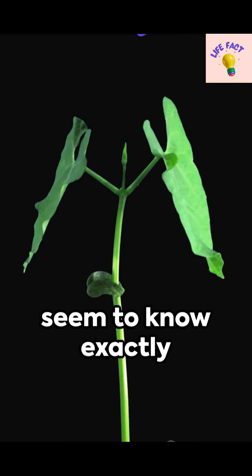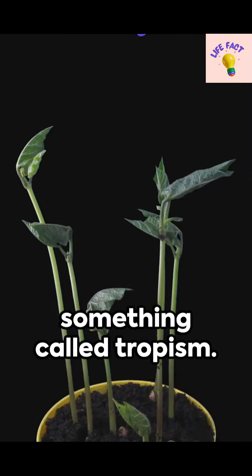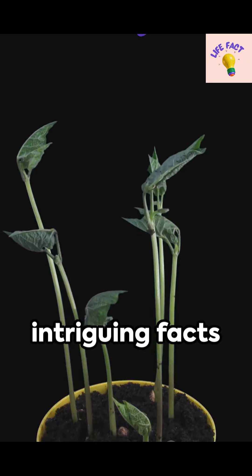Ever marvel at how plants seem to know exactly where to grow? It's all thanks to something called tropism. Here are 8 intriguing facts about it.